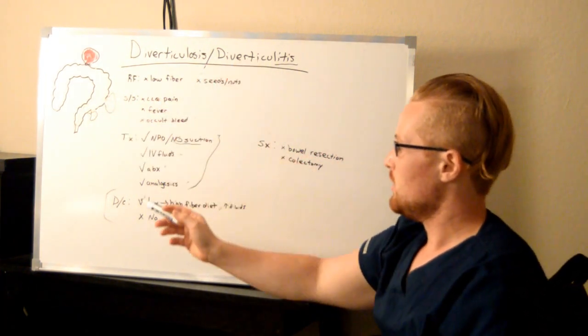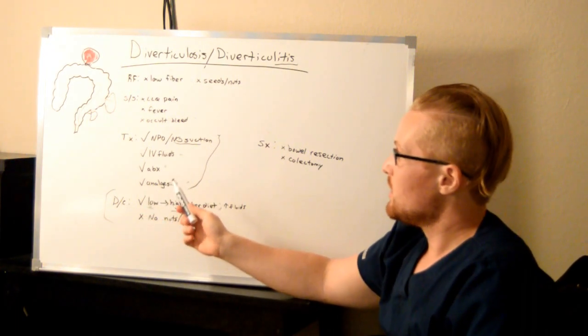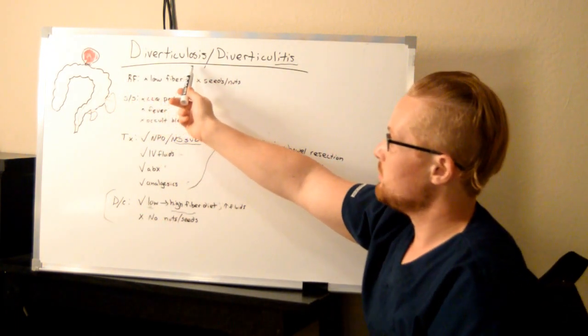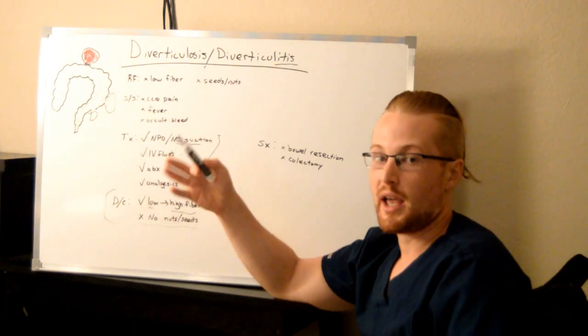Once everything's back to normal, go ahead and do the high fiber diet to prevent any future diverticulum to develop. And you definitely want to say no nuts and no seeds because you don't want any of the diverticulum to clot off.